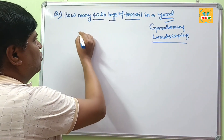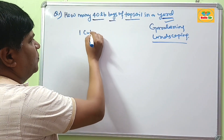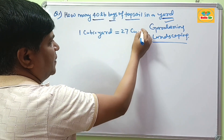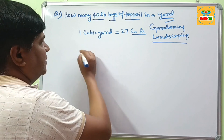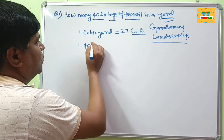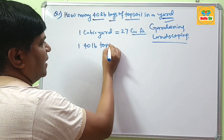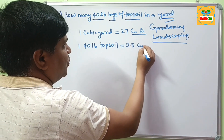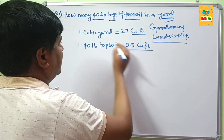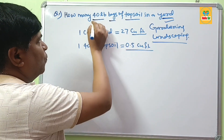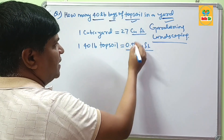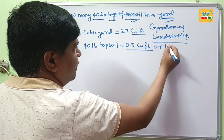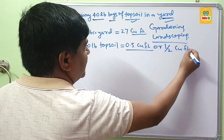1 cubic yard is equal to 27 cubic feet. And 1 bag of 40 lb topsoil is about 0.5 cubic feet — in other words, it is half a cubic foot.